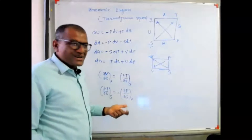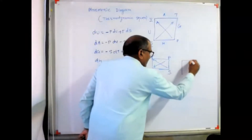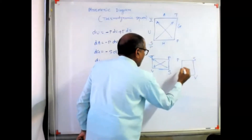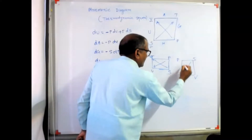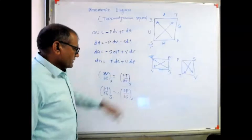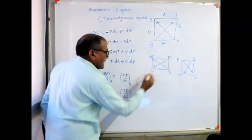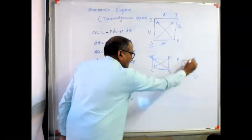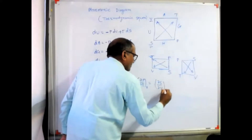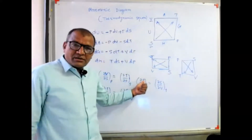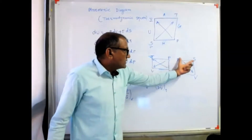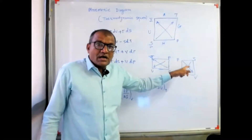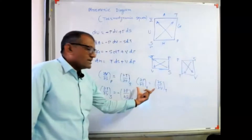For the third Maxwell relation, I rotate the diagram one more time. In this case, I can write: (∂P/∂T) at constant V equals (∂S/∂V) at constant T. Here, the first variables are P and S, and in both cases the arrows point away from the first variable in the same direction, so there is no sign change.